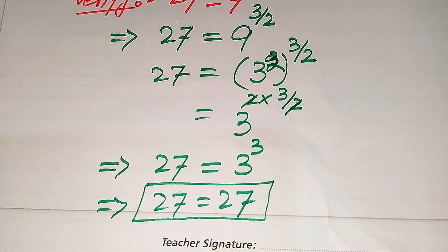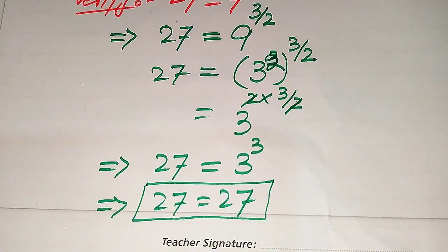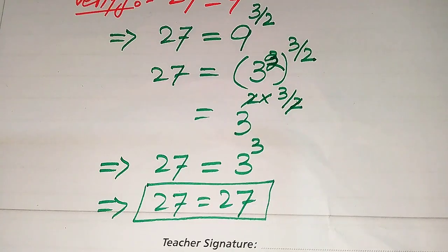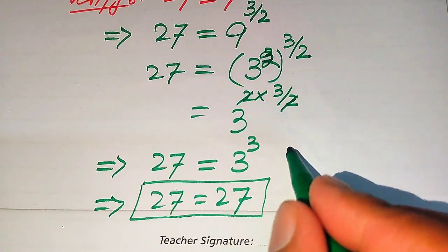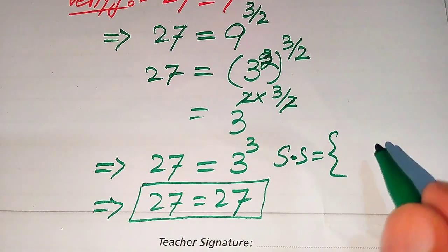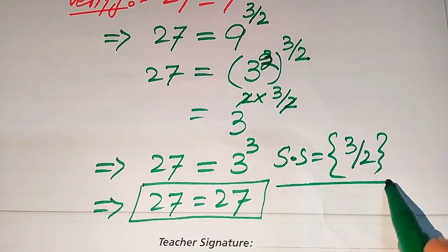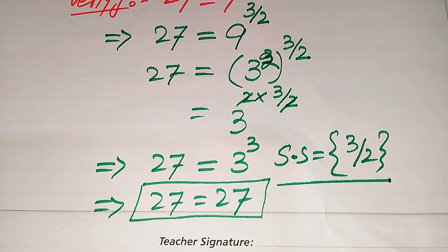The difference between a solution and an extraneous root: roots which satisfy the given equation are called solutions, and roots which do not satisfy the given equation are called extraneous roots. Here we could not find any extraneous root — we have only the solution. So our final conclusion is that the solution set of this question is x equals 3 divided by 2. Thank you for watching this video. Please subscribe to my channel for more exciting videos.